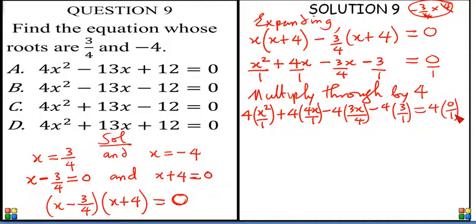I have multiplied through by 4. If you look at this very well, this 4 cancel this 4. Let me do it again. This 4 cancel this 4. And what we are left with will be 4x squared plus 16x minus 3x minus 12 is equal to 4 times 0, that's 0.